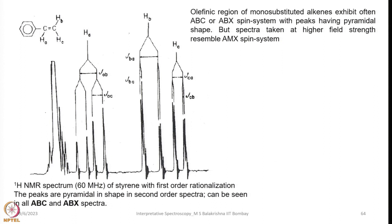In this spectrum the peaks are pyramidal in shape, as can be seen in ABC and ABX spectra. The olefinic region of mono-substituted alkenes often exhibits ABC or ABX spin systems with peaks having pyramidal shape, but spectra taken at higher field strength resemble an AMX spin system. In my earlier lecture I showed how ABC becomes ABX and eventually AMX in the case of styrene itself.